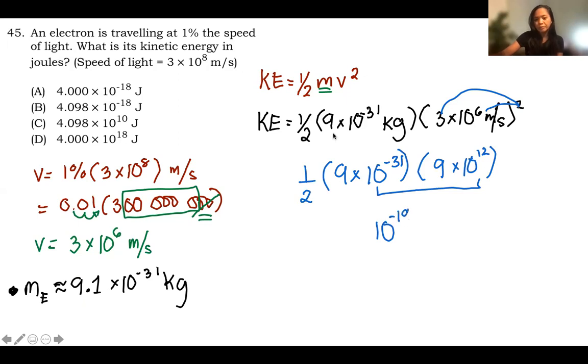You just add the exponent, a negative 31 and a positive 12. That will be negative 19. And you have 9 times 9. I have 81 and a half of that.